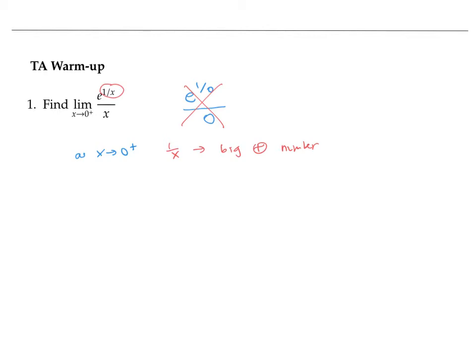And here I'm approaching zero from the right. So I'm dividing by small positive numbers. Positive over positive is positive. Therefore, I'm getting big positive numbers. In other words, one over x is heading towards infinity, positive infinity.